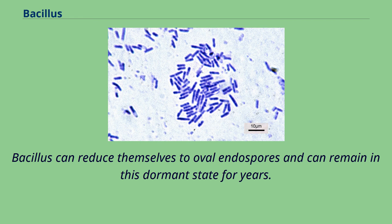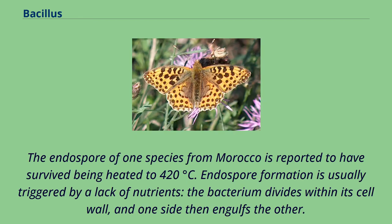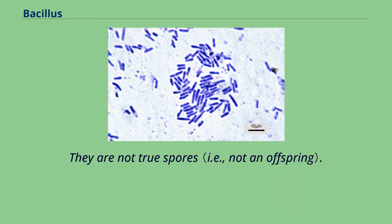Bacillus can reduce themselves to oval endospores and can remain in this dormant state for years. The endospore of one species from Morocco is reported to have survived being heated to 420 degrees Celsius. Endospore formation is usually triggered by a lack of nutrients; the bacterium divides within its cell wall, and one side then engulfs the other. They are not true spores.